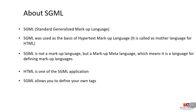SGML allows you to define your own tags. HTML has predefined tags such as the paragraph tag, heading tags, and different tags — for example, the p tag with open and close. With SGML you can define your own custom tags. That language is SGML.